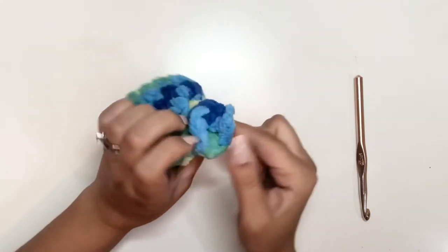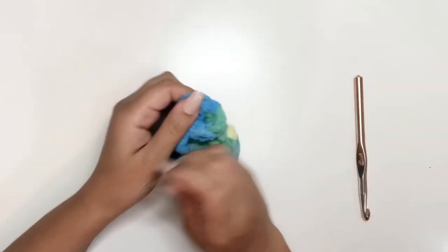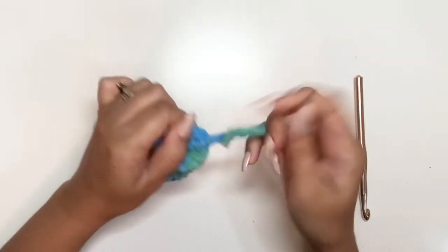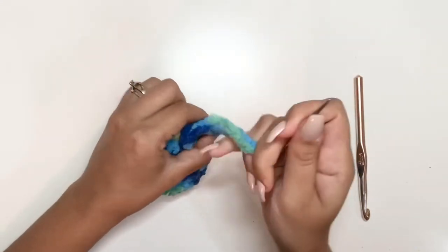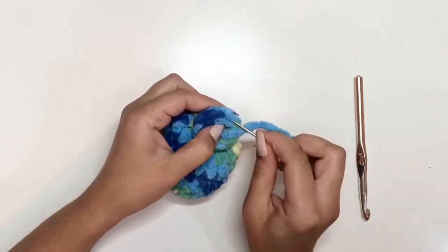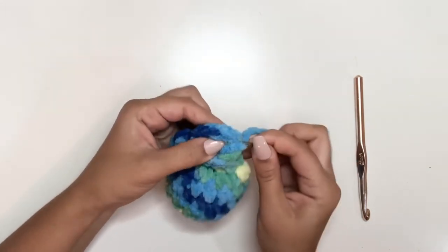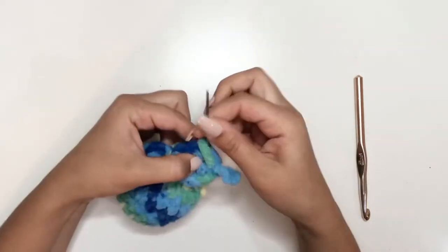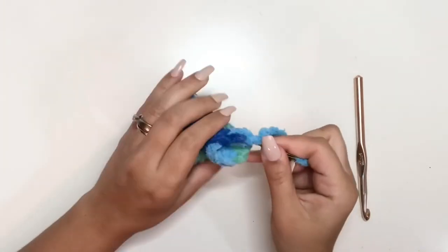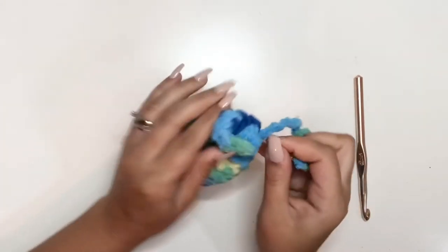And there you have an invisible join. Can't really notice it as much with this yarn. Now I usually just somehow knot it right in the beginning here just to secure it, and then I weave it through the yarn.